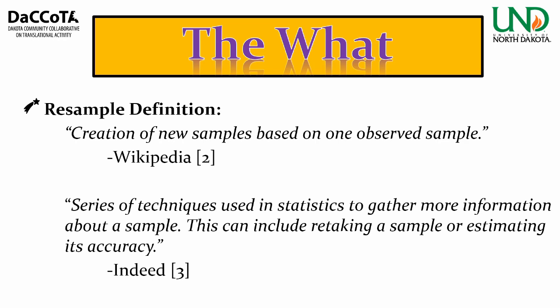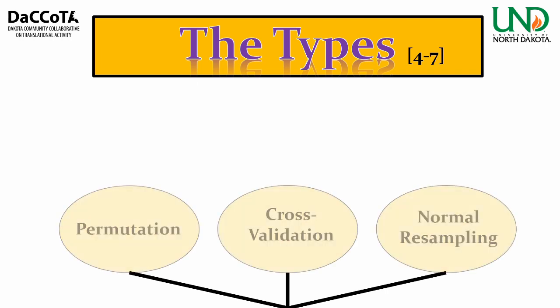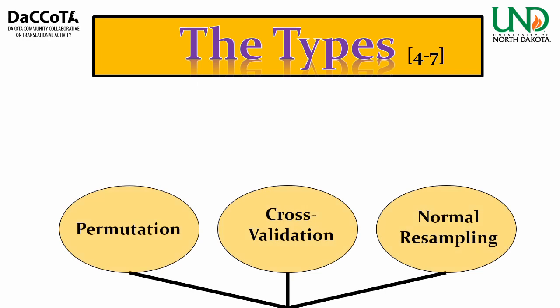Resampling is a series of statistical techniques especially for retaking a sample or estimating accuracy. Turning to the types of resampling — different types are used for different outputs. I put together three major types: permutation, cross-validation, and normal resampling.